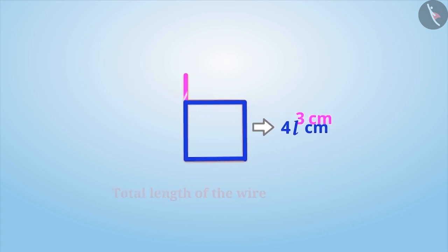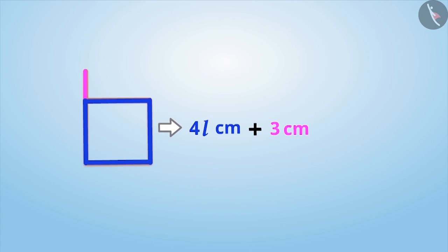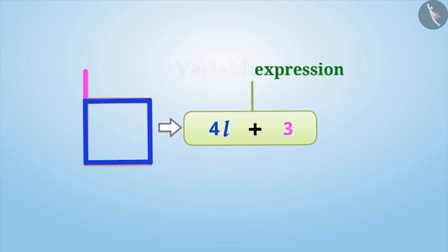If the length of the remaining wire is added to this length, then we will get the total length of the wire in the form of variable L. Now what we have here is called an expression. Since a variable is used in this expression, it is called an algebraic expression.